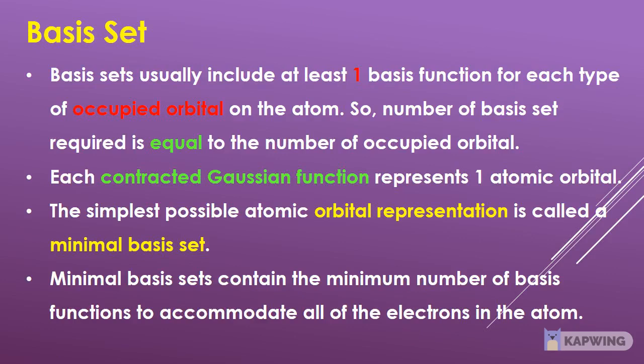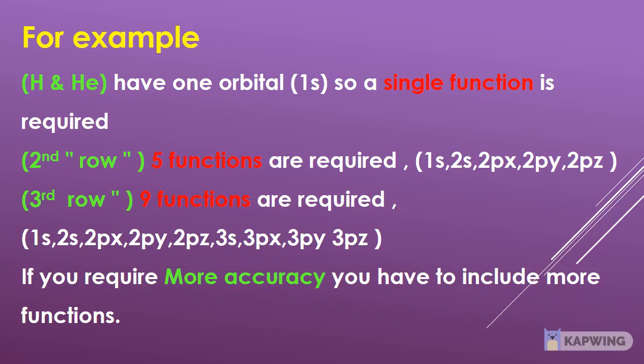Each contracted Gaussian function represents one atomic orbital. The simplest possible atomic orbital representation is called a minimal basis set. Minimal basis sets contain the minimum number of basis functions to accommodate all of the electrons in the atom. Hydrogen and helium have one orbital (1s), so a single function is required. For second-row elements, 5 functions are required: 1 for 1s, 1 for 2s, and 3 for 2p.